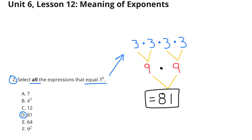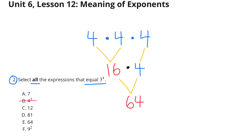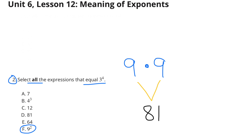B looks like it could work — let's test it: 4 times 4 times 4, or 16 times 4, equals 64. That's too small. F: 9 squared, or 9 to the second power — wait, that means 9 times 9, and 9 times 9 is 81. So F works. The expressions that equal 3 to the fourth power are D and F.